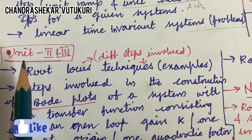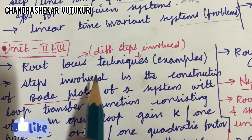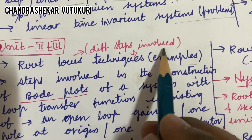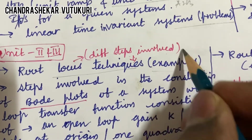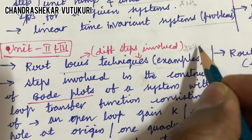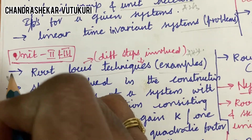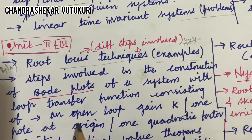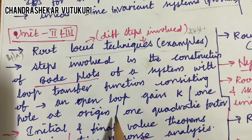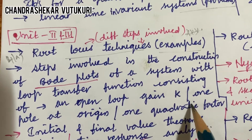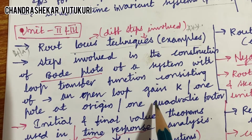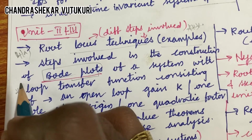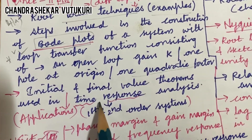Now let's look at Unit 2 and Unit 3 questions together. Root locus techniques, along with examples and different steps involved in root locus technique, is said to be a topmost key question which may occur in the paper at 4a. Steps involved in the construction of Bode plots of a system with a loop transfer function consisting of an open loop gain K, one pole at origin, or one quadratic factor is related to Bode plots — you are going to get one question for sure.